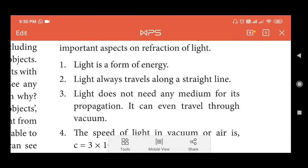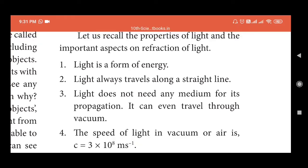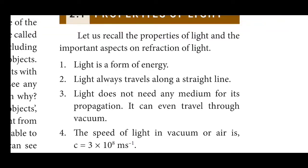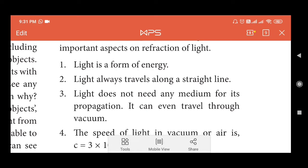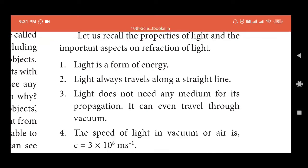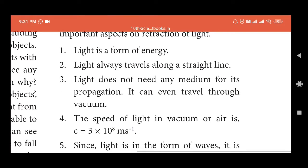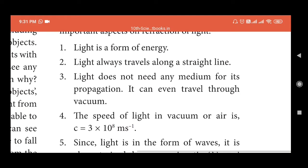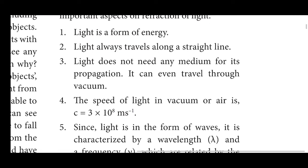Light is one medium that will travel. For example, sound is not easy to travel in the same way. Light travels through vacuum, and the speed of light in a vacuum is 3 × 10⁸ meters per second.